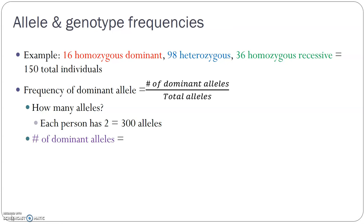So if we have 150 individuals, each has two alleles, giving us 300 total alleles in this population. To find dominant alleles, we take two times the homozygous dominants (16), because each has two big A's, and add the heterozygotes (98), because each has one dominant allele. That gives us 130 dominant alleles.